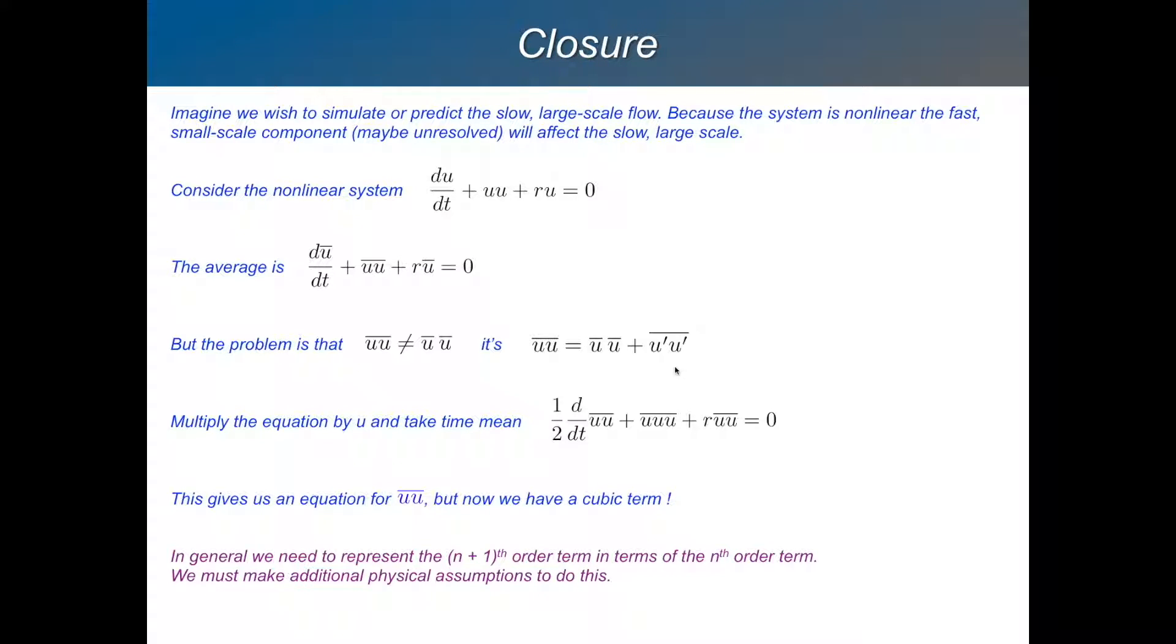So we could, conceivably, we could say, well, let's just write an equation for this. Let's write an equation for the u u bar term. And we can do that. We can multiply this original equation by u. So we get an equation for u times u, right? Which is a half of d by dt of u times u plus u u u plus r u u. So there's an equation for the development of u u bar.